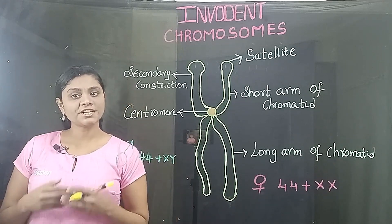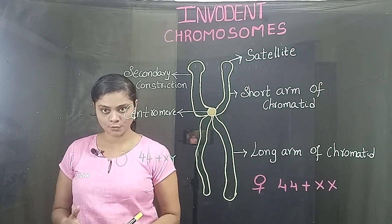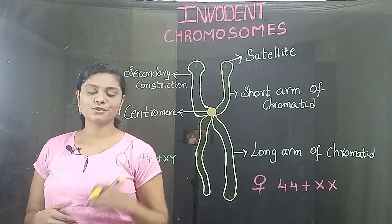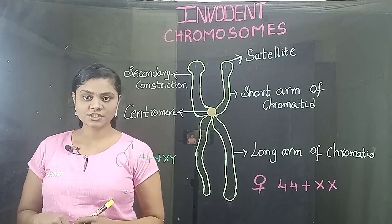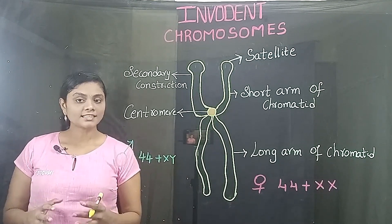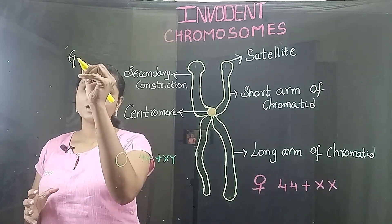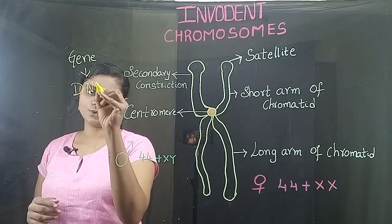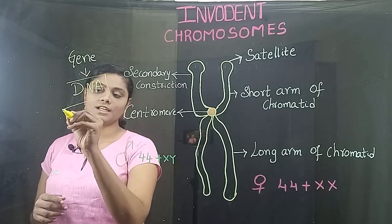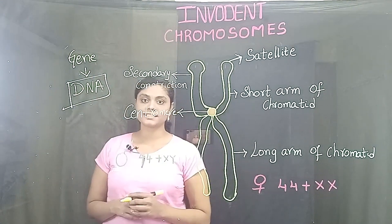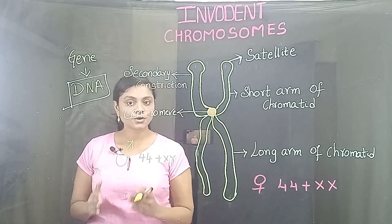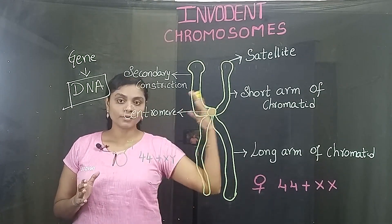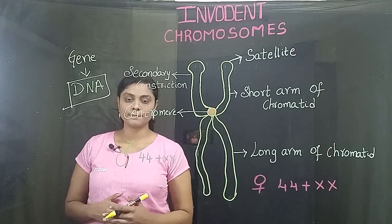So where is this genetic information actually stored in the fertilized ovum? It's in the chromosomes. Chromosomes are structures in the cells that are made up of genes. These genes are composed of deoxyribonucleic acid, which is the actual storehouse of all the information necessary to build a well-organized individual.